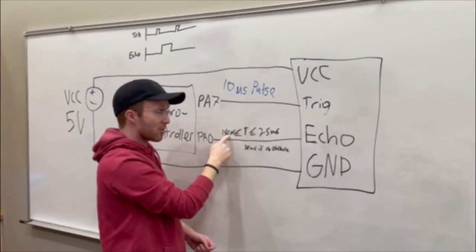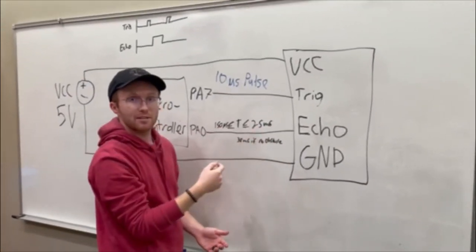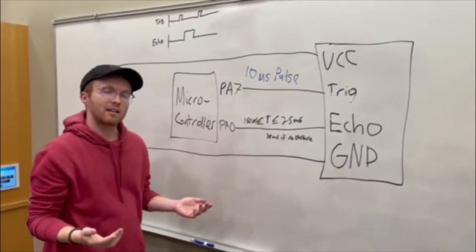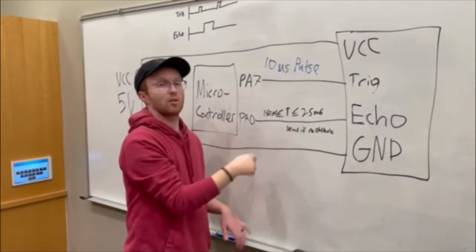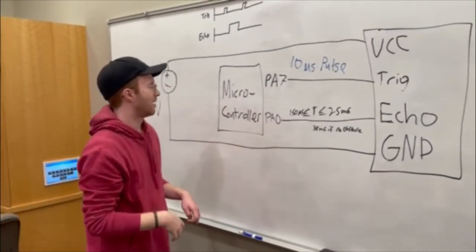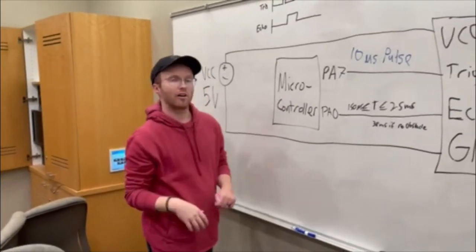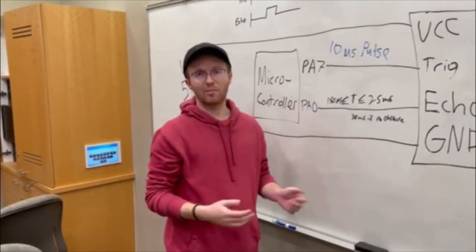The echo width is between 150 microseconds and 25 milliseconds. If it isn't detecting anything in its path, it automatically defaults to 38 milliseconds. That's how our ultrasonic sensor works on our microcontroller.